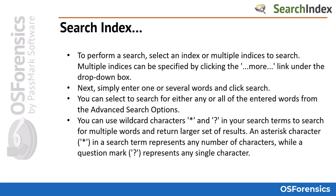To perform a search, select an index to search. Multiple indexes can be specified by clicking the more link under the drop-down box. Next, simply enter one or several words and click search. You can select a search for either any or all of the entered words from the advanced search options.